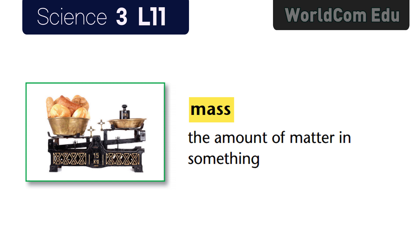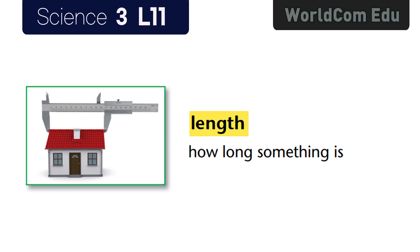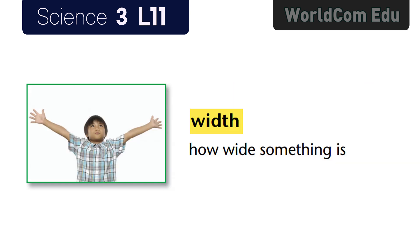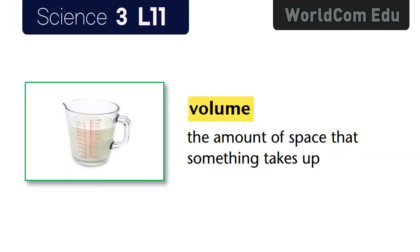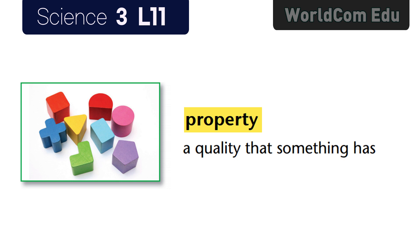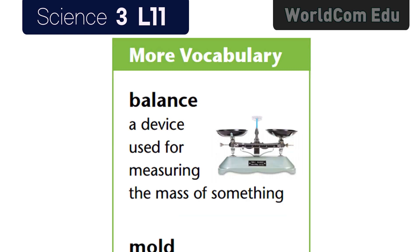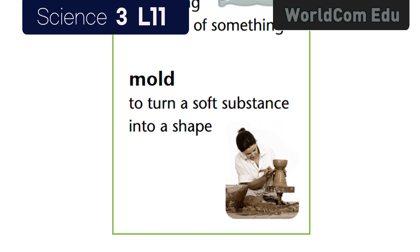Lesson 11: Describing Matter. Mass — the amount of matter in something. Length — how long something is. Height — the measurement of something from its bottom to its top. Width — how wide something is. Volume — the amount of space that something takes up. Property — a quality that something has. Balance — a device used for measuring the mass of something. Mold — to turn a soft substance into a shape.